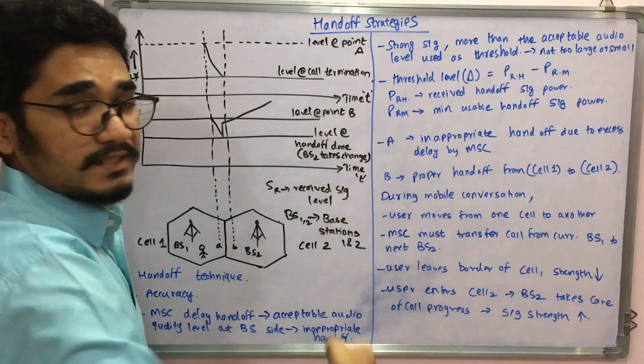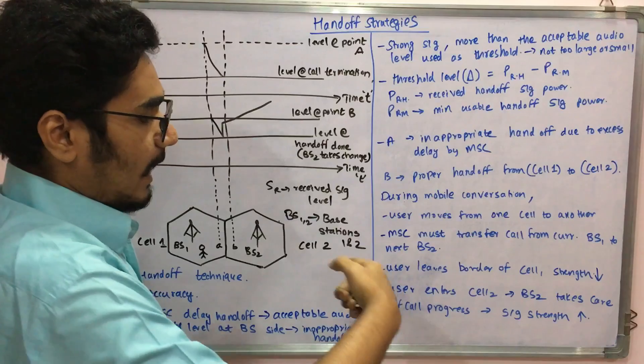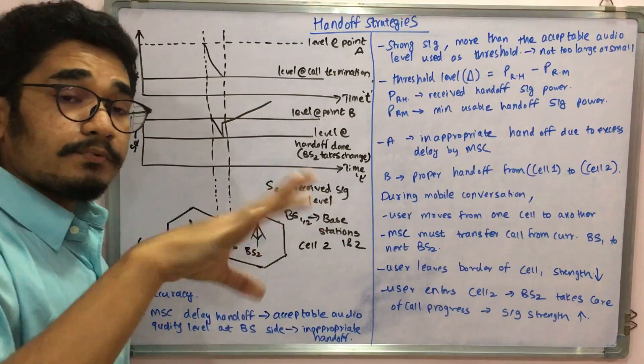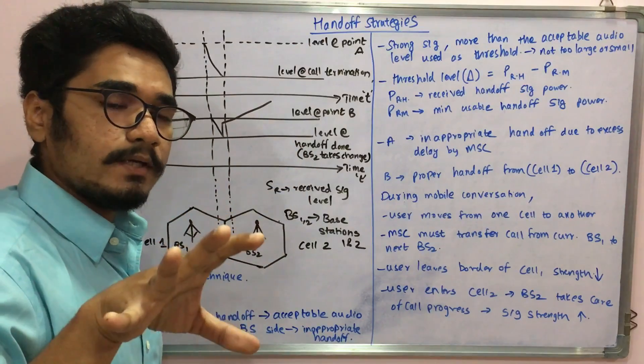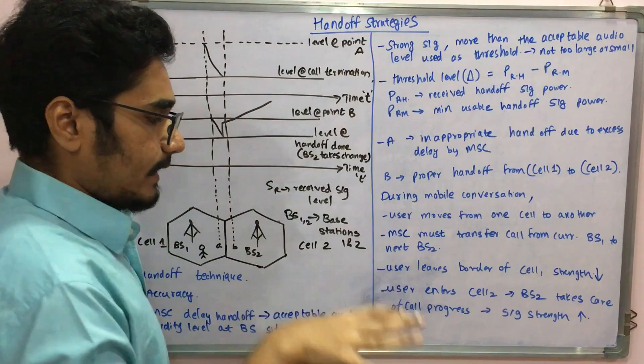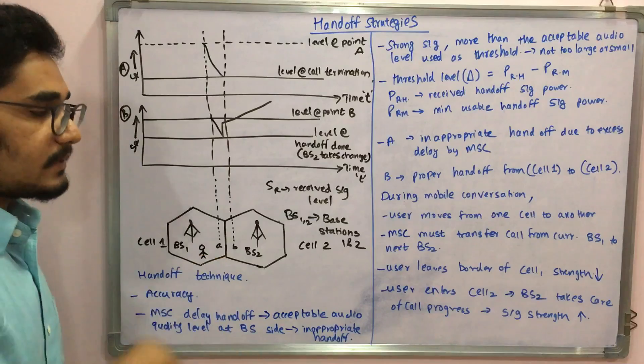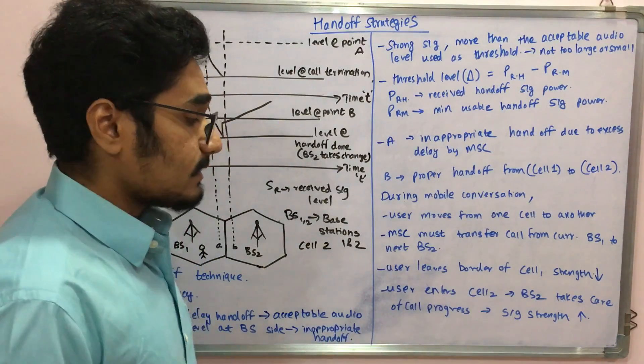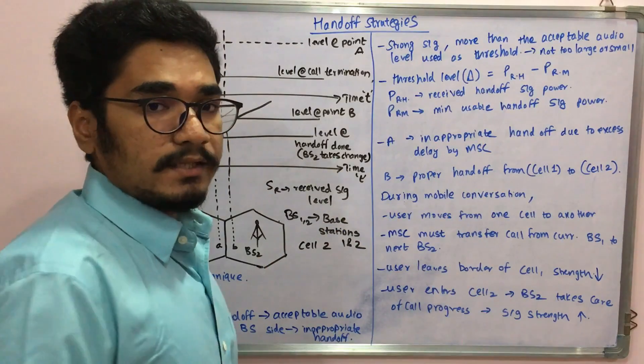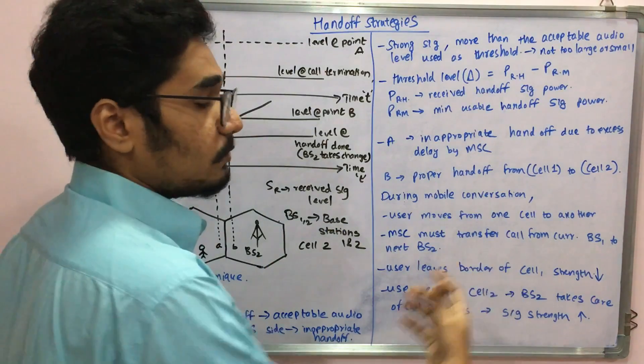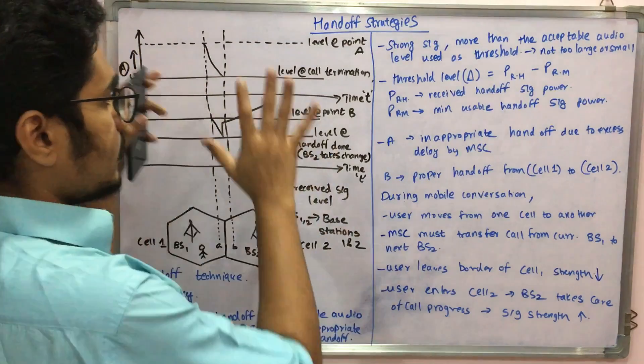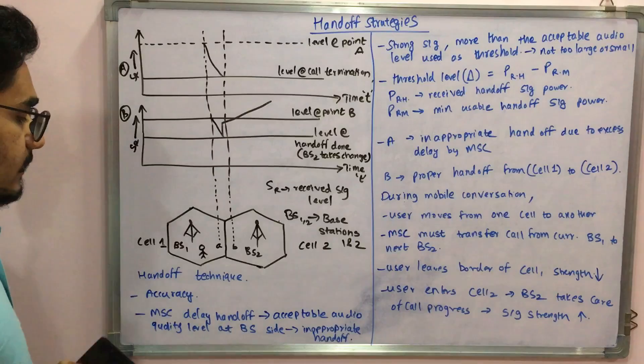Whenever I left this border of cell 1, the signal strength of the first base station, BS1, got dropped or decreased. Then when the user entered cell 2 and made a call, base station 2 takes care of the call in progress and the signal strength gradually increases due to base station 2. This was all regarding the handoff technique.